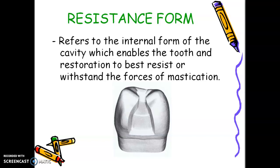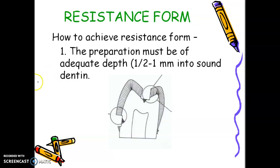When we talk about resistance form, it also prevents stress to the tooth or restoration. So how to achieve resistance form? The preparation must be of adequate depth, 0.5 to 1 mm into sound dentin.